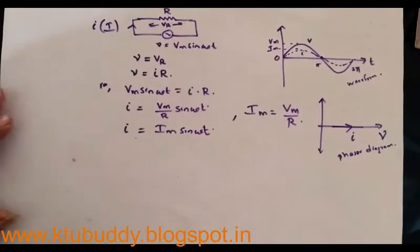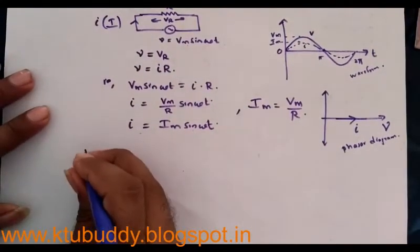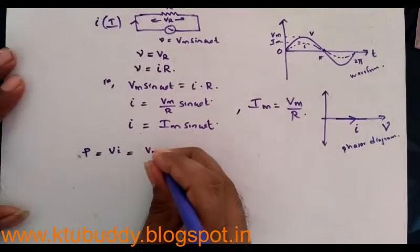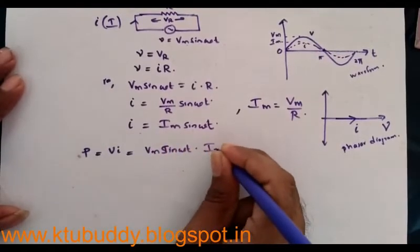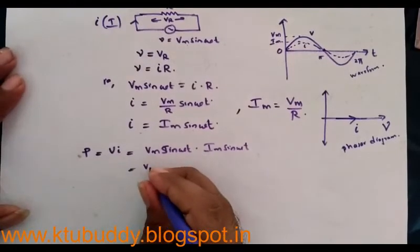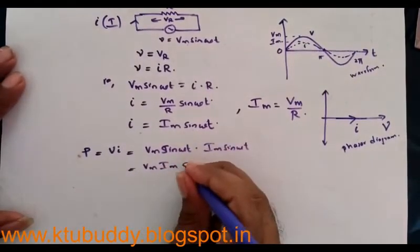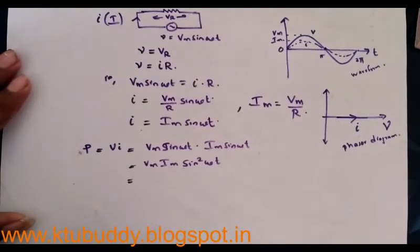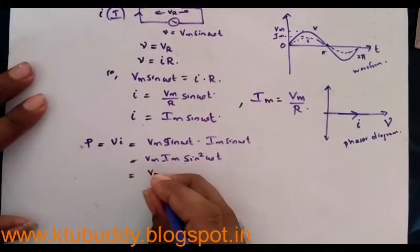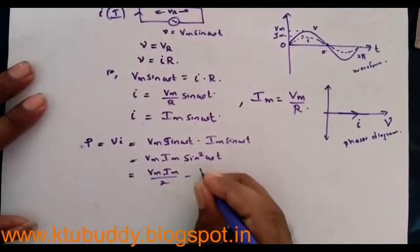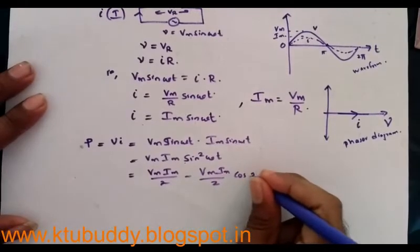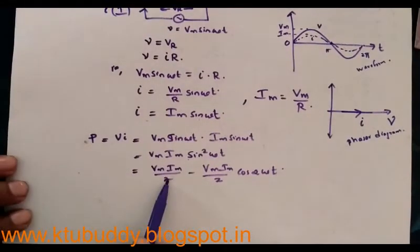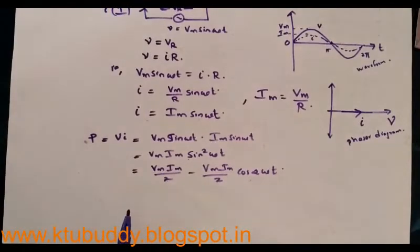Next, I determine the power consumed in a purely resistive circuit. Instantaneous power p = V × I = Vm sin(ωt) × Im sin(ωt) = Vm Im sin²(ωt). Using the identity sin²(ωt) = (1 − cos 2ωt) / 2, expanding gives: p = (Vm Im / 2) − (Vm Im / 2) cos(2ωt). The instantaneous power consists of two parts: a constant part Vm Im / 2, and a fluctuating part that depends on angular frequency.